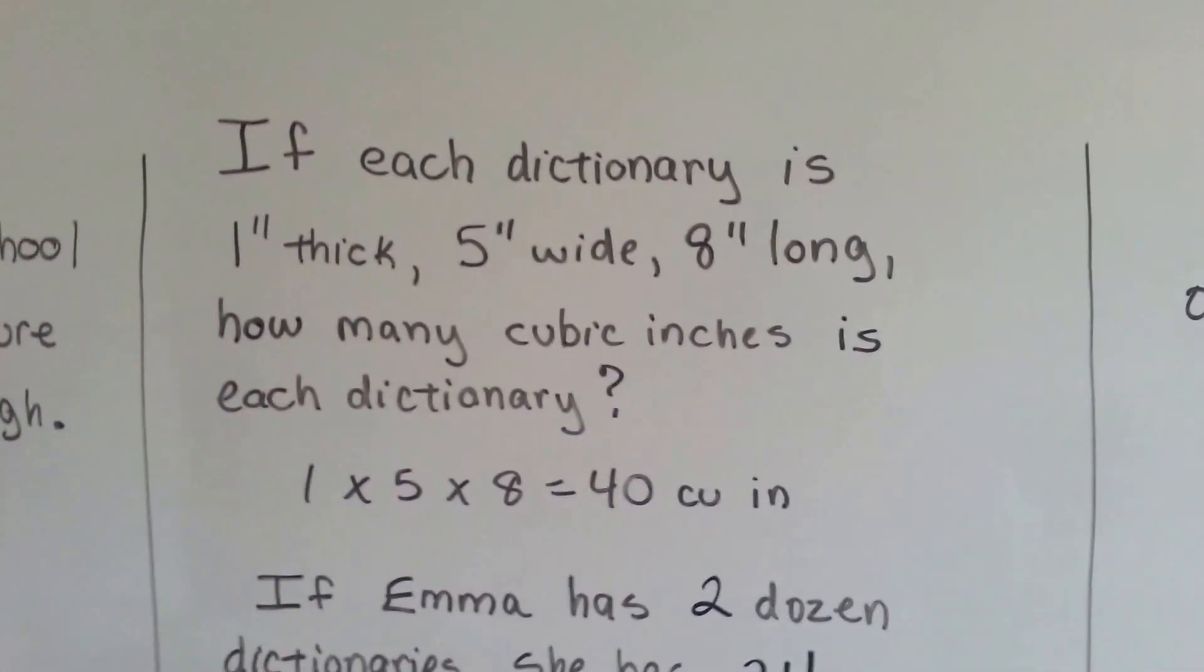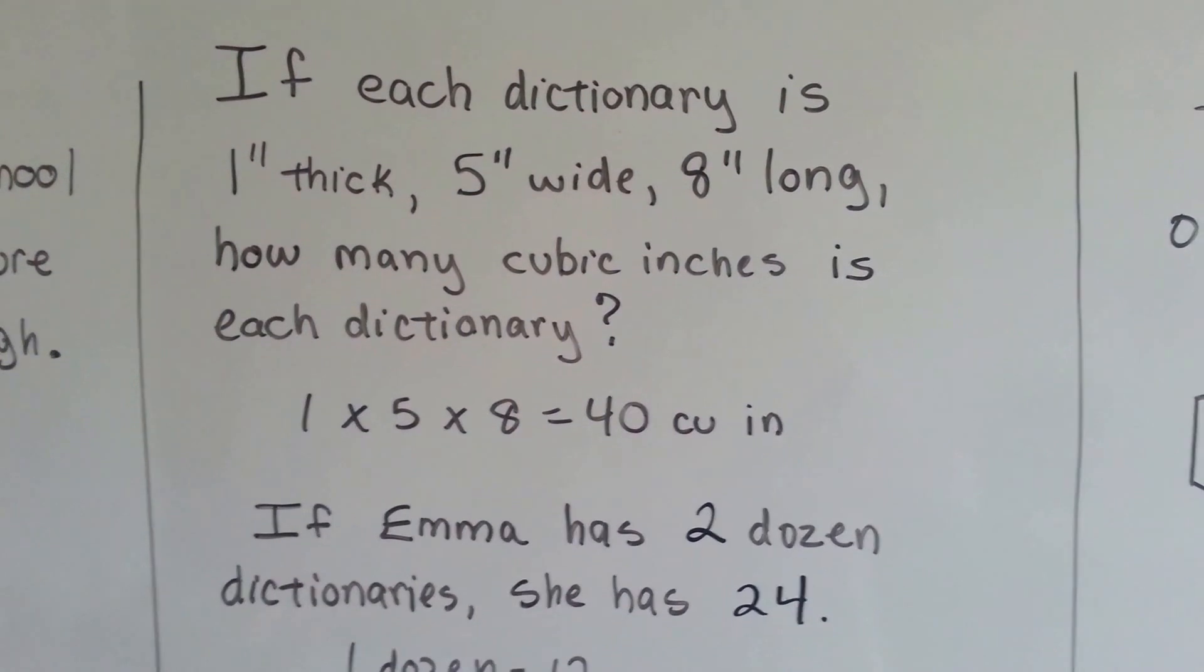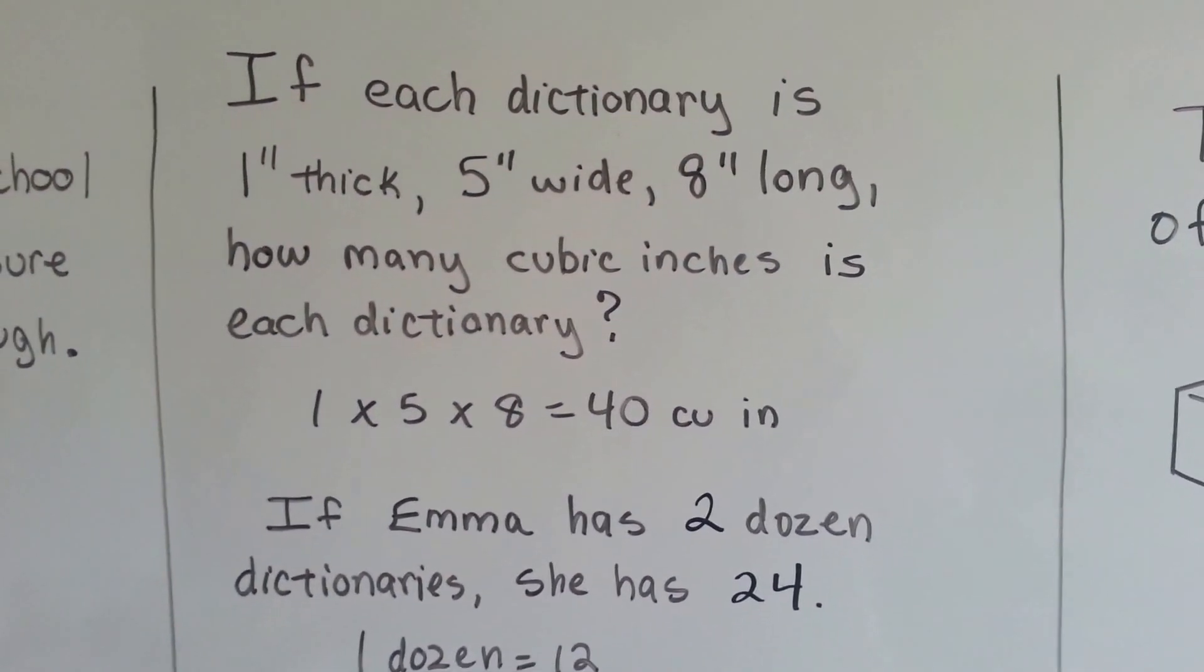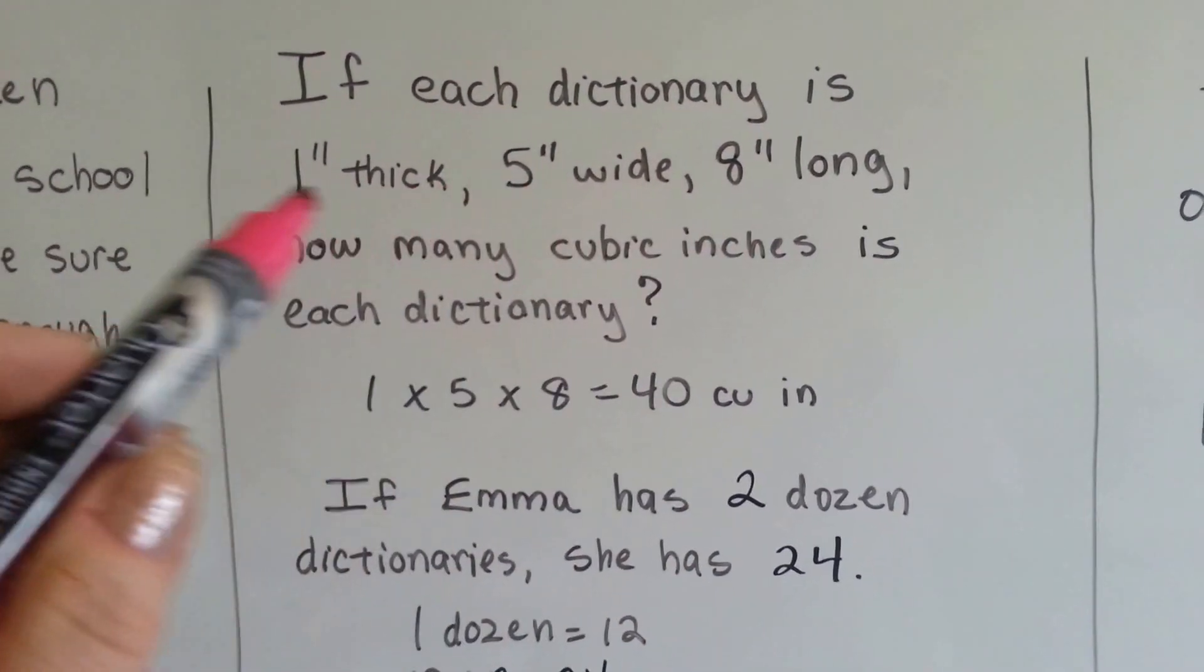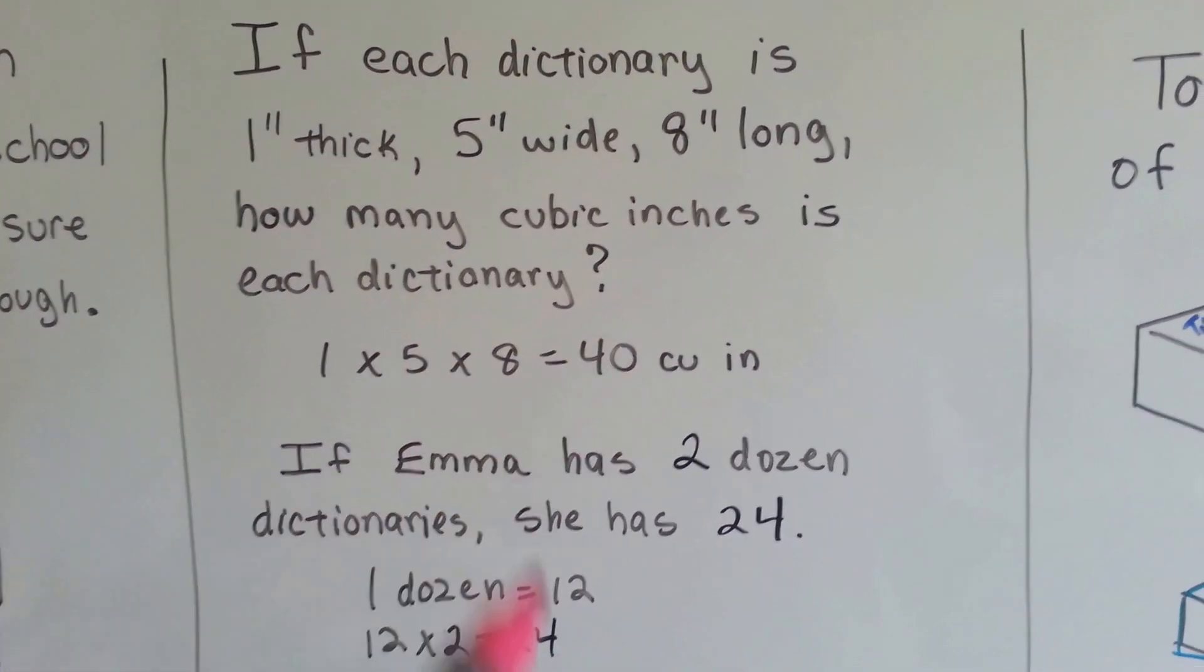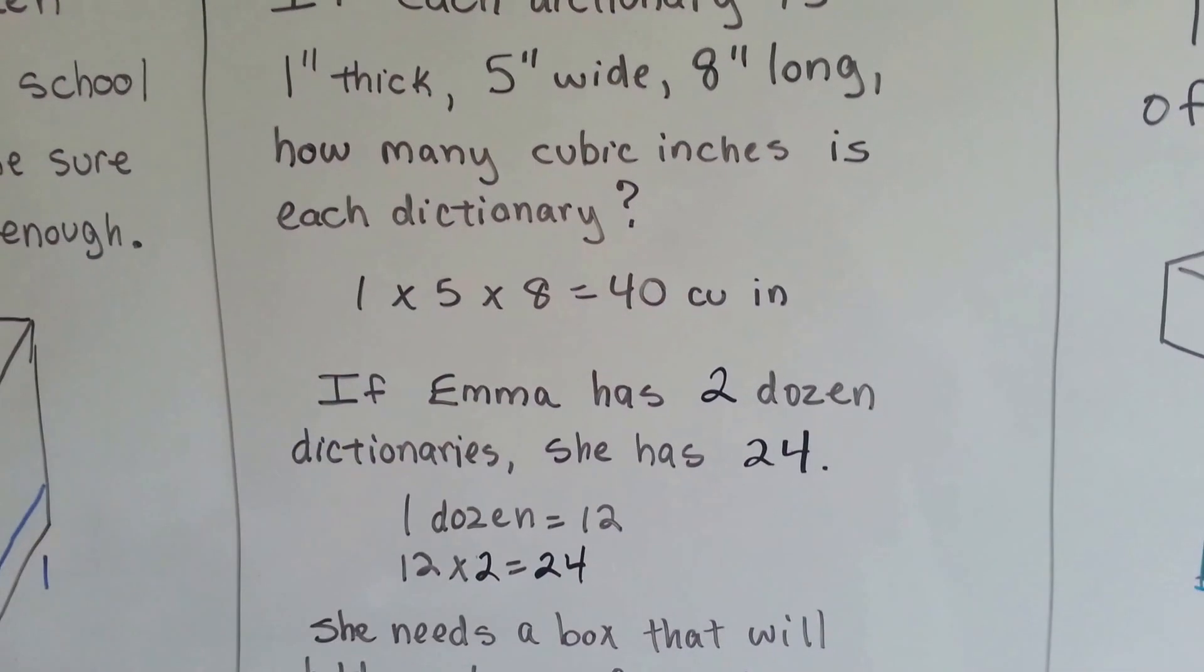If each dictionary is one inch thick, five inches wide, and eight inches long, how many cubic inches is each dictionary? You multiply each of the dimensions. One times five is five, times eight is forty. Each dictionary is forty cubic inches.